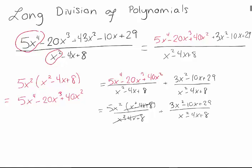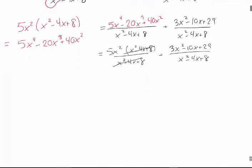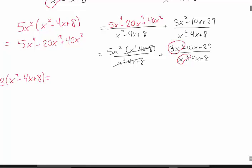But we still can't quite do partial fractions. In order to do partial fractions, the degree of the numerator has to be strictly less than the degree of the denominator. So I just need to do this method one more time. I want to take out the biggest power of the denominator that I can by matching up the leading terms. In order to turn an x squared into a 3x squared, I just multiply the denominator by 3. Three times my denominator gives me 3x squared minus 12x plus 24, and that's what I want to pull out from the top.